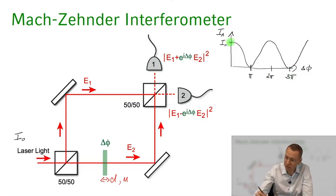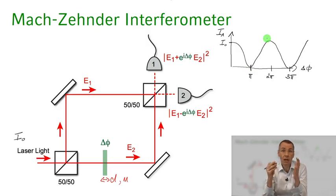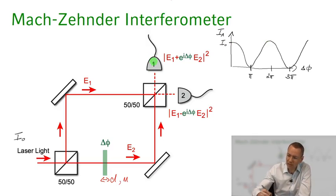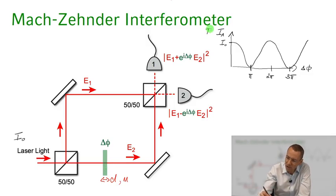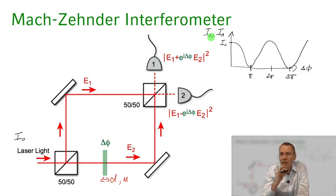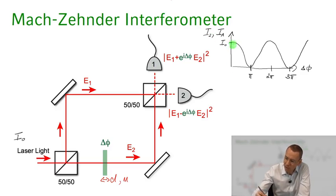So rather than a 50-50 split, we can get all the light coming out on detector one or no light on detector one, depending on the relative phase of E1 and E2. By energy conservation, the total light intensity must be conserved — if everything comes out on port one, nothing comes out on port two, and vice versa.